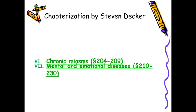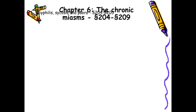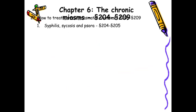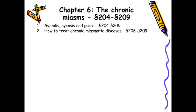Then chapter 6 on chronic miasms: syphilis, sycosis, and psora. Syphilis being the most ancient disease mentioned first, subsequently gonorrhea was a later one, and psora the most junior. In our descriptions we write psora, sycosis and syphilis because we arrange them alphabetically. These have been described in short in aphorism 204 and 205 — remember, these descriptions were not there in the first three editions of the Organon. Then how to treat chronic miasmatic diseases.